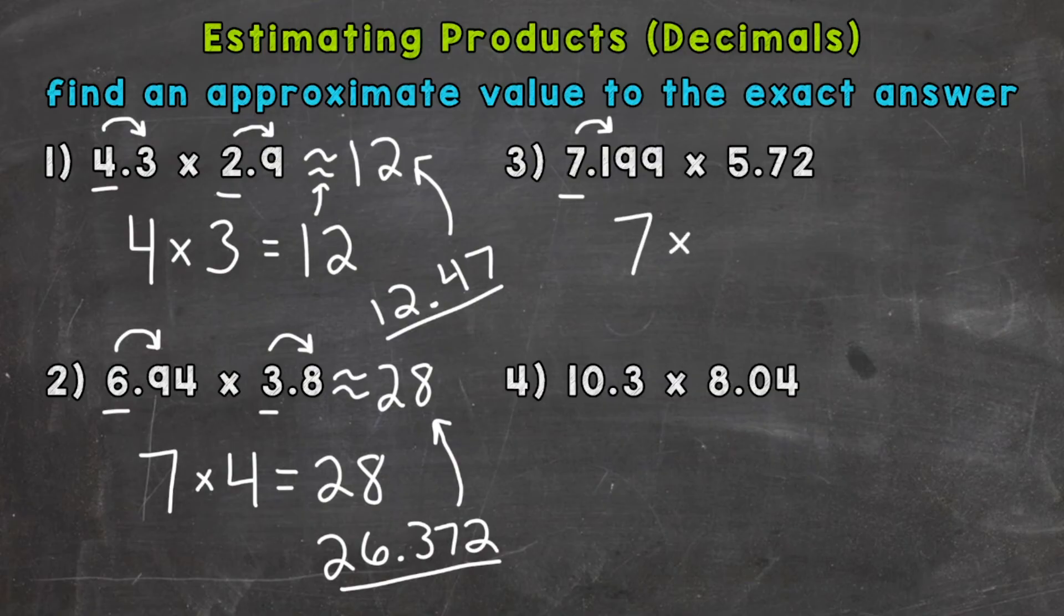Times 5.72 rounds to 6. So 7 times 6 gives us an estimate of 42.